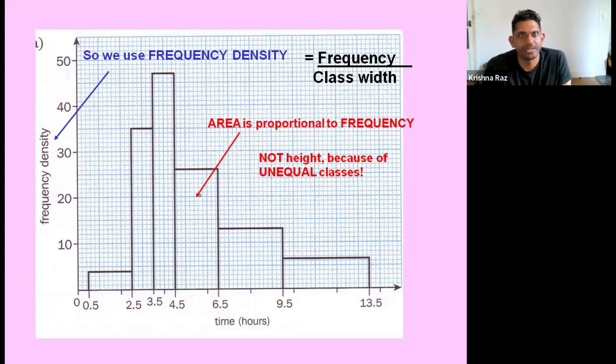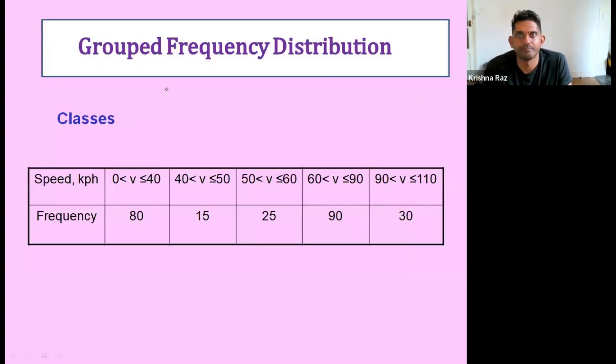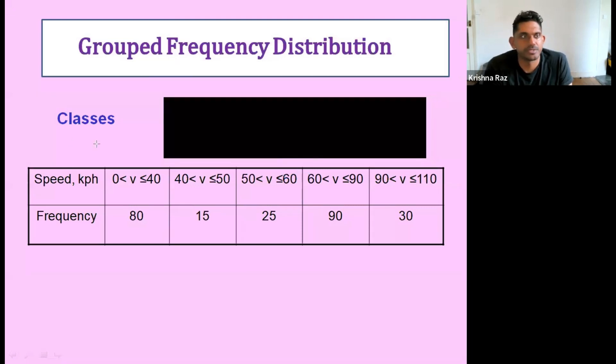So let's just put that into practice and draw a histogram. So we have the data below and I'm just going to sum up what we have. So from earlier, the frequency density equals frequency divided by class width. If we do a formula triangle, it will be FD, frequency, class width.